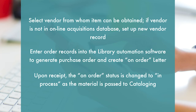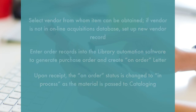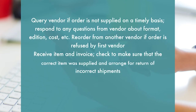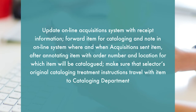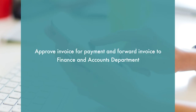Select a vendor from whom the item can be obtained; if the vendor is not in the online acquisition database, set up a new vendor record. Enter order records in the library automation software to generate the purchase order and create an order file upon receipt. The order status is changed to 'in process' as material is passed to cataloging. Query the vendor if the order is not supplied on a timely basis. Reorder from another vendor if the order is refused. Upon receiving the item and invoice, check that the correct item was supplied, update the online acquisition system, forward the item for cataloging, and approve the invoice for payment, forwarding it to the finance and accounts department.